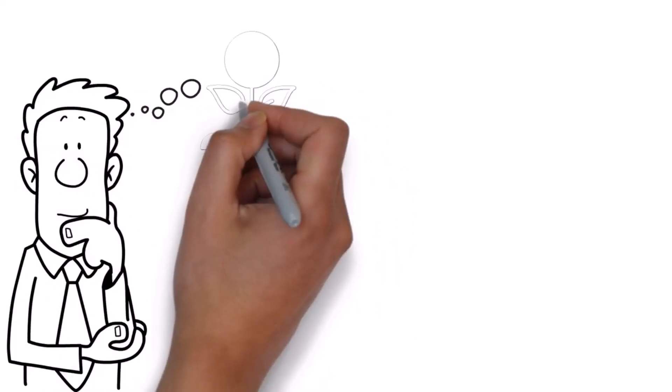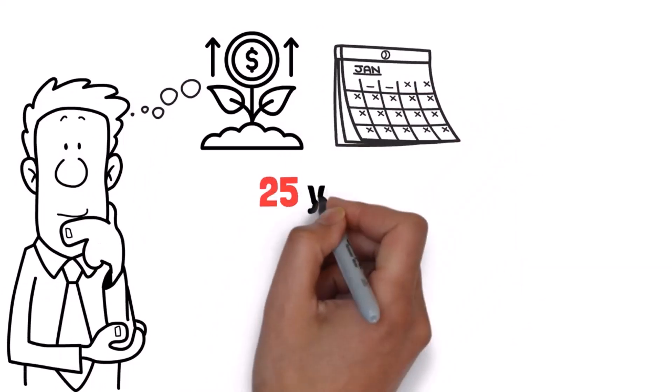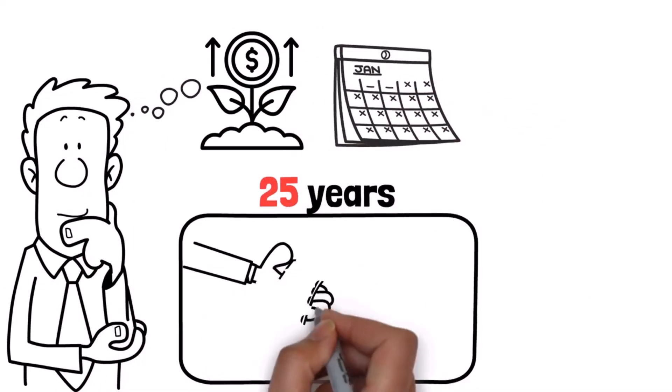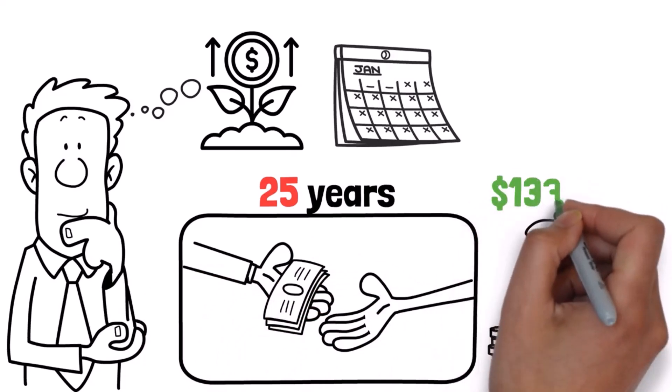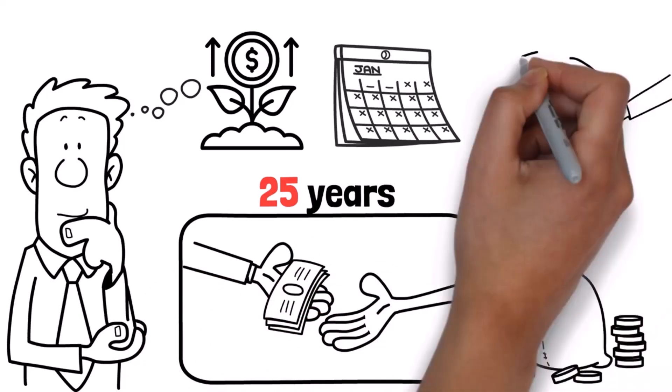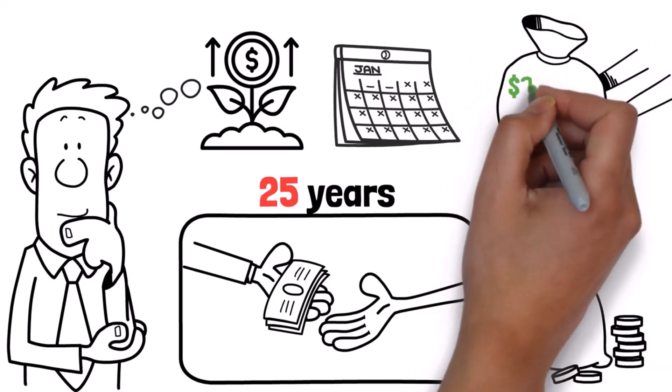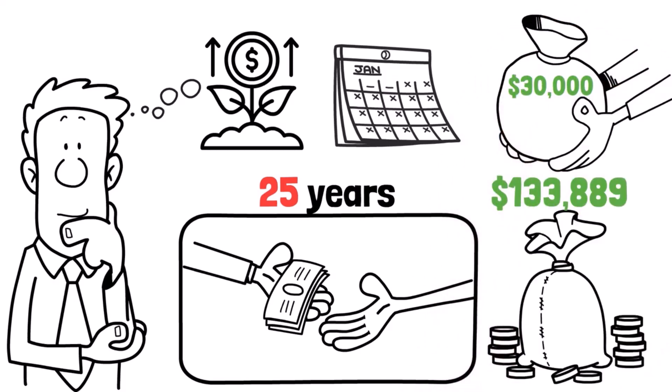Did you know that if you invested $100 per month for 25 years at a conservative 10% return, your portfolio would be worth $133,889? And the best part, you'll only have contributed $30,000 over your investment timeline, meaning you'll have earned around $103,889 in returns, which is more than three times your investment.